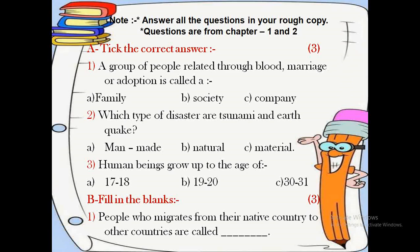Now coming on question number A, that is tick the correct answer. This question is of 3 marks, children. In this question you will have 3 sub-questions, and each question has 3 options, but only one is correct and the other 2 are incorrect. You have to choose the correct one and write it down.